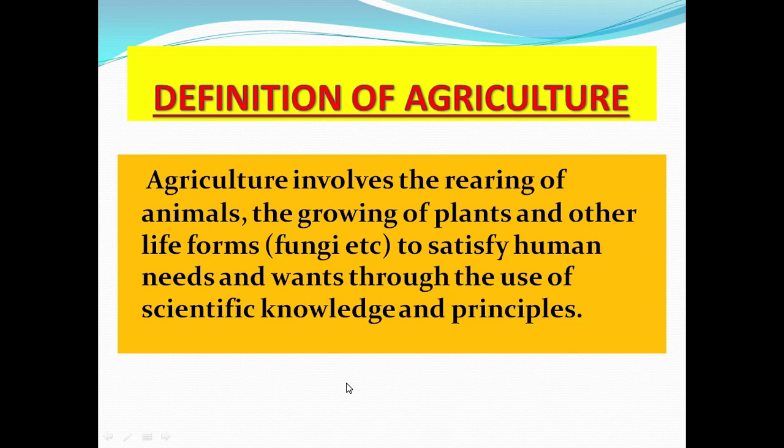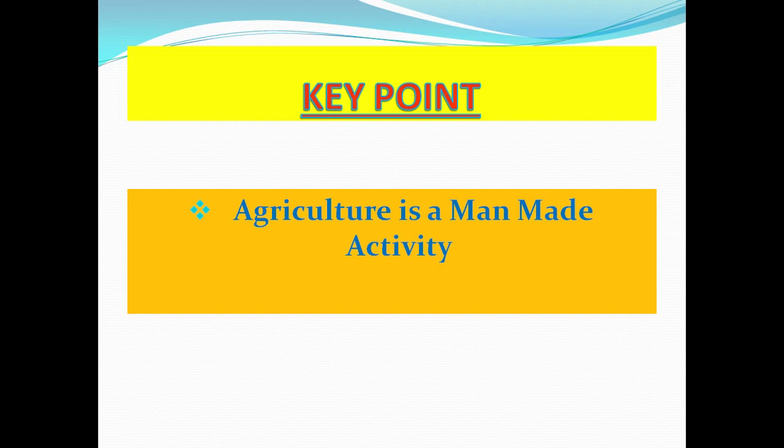A key point: agriculture is a man-made activity. It is intentionally created by human beings to satisfy their needs. Now let us get into the history of agriculture, but first there is another part of the definition to cover.